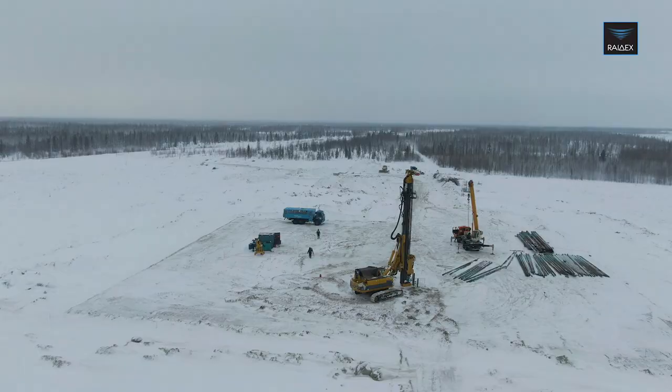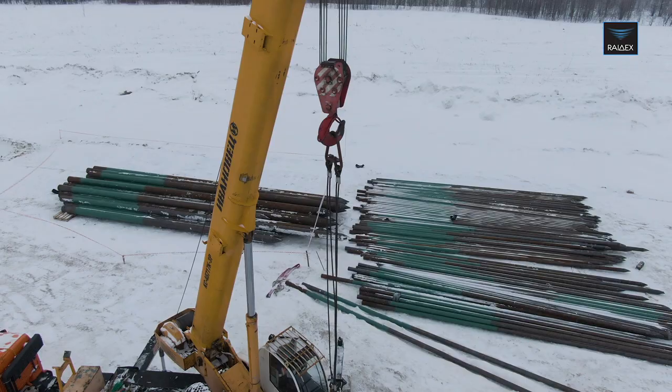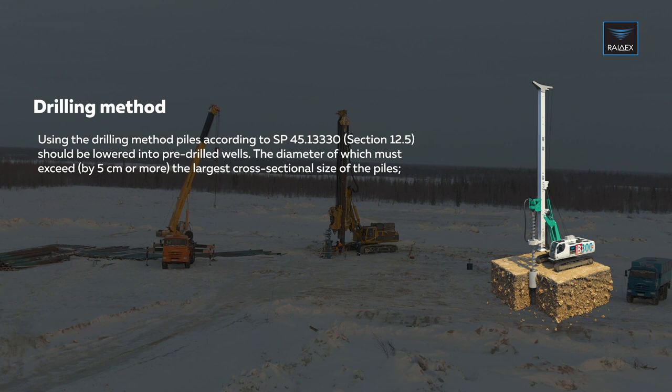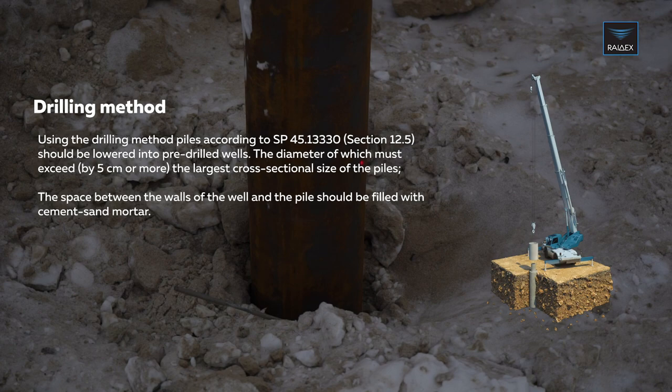Pile immersion in permafrost soils is carried out using one of the following methods. Using the drilling method, the piles should be lowered into pre-drilled wells, the diameter of which must exceed the largest cross-section of piles by 5 cm or more. The space between the walls of the well and the pile should be filled with a cement-sand mortar.